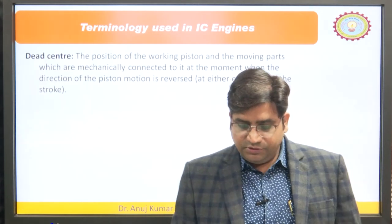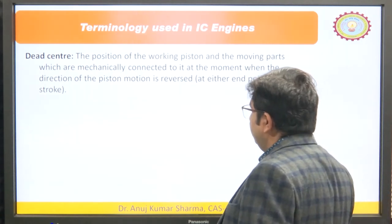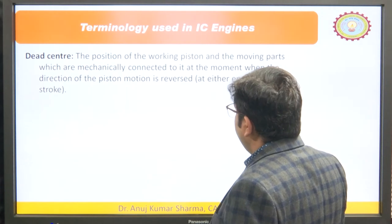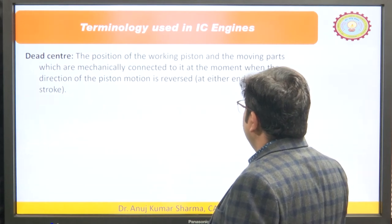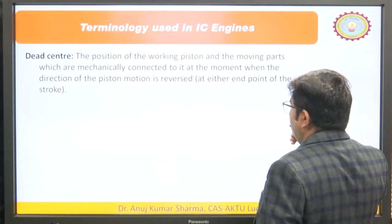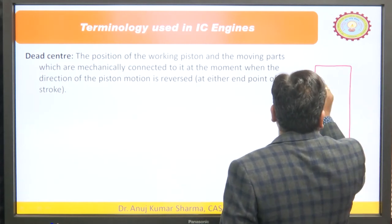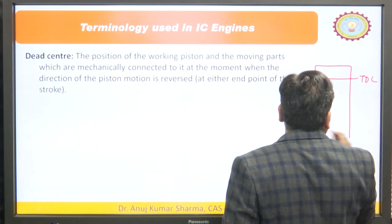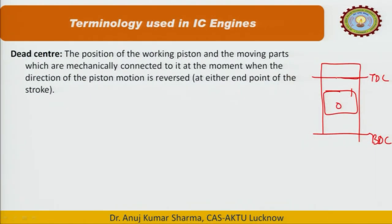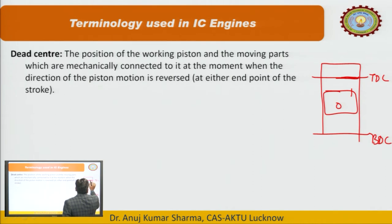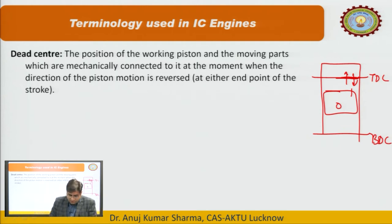Next is the dead centre. These are the positions of the working piston and the mechanically connected moving parts at the moment when the direction of piston motion is reversed at either end of the stroke. At TDC the piston's velocity is directed upward, and when it reaches that position the velocity reverses direction. So this reversal of direction is known as the dead centre.